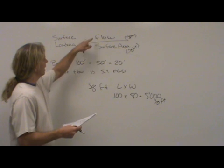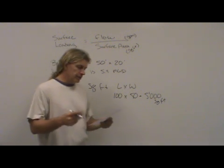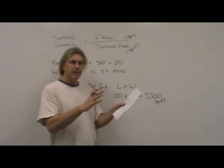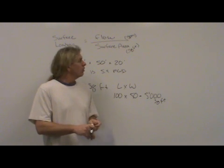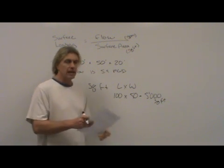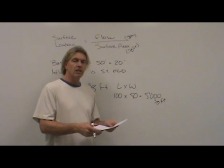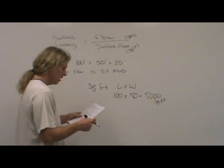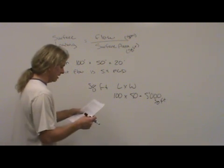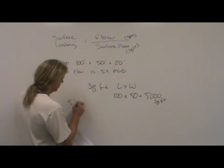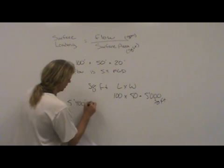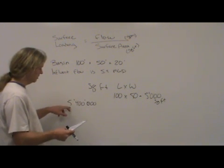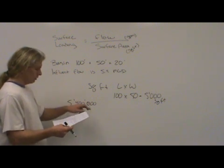The question tells you a sedimentation basin is 100 feet long times 50 feet wide times 20 feet deep. We don't need the 20 feet. So to solve for surface area, it's length times width, 100 times 50. We're going to have a surface area of 5,000 square feet. Now, to solve this, we have to get our flow in gallons per minute. The question says, what is the surface overflow rate if the influent flow is 5.4 million gallons per day?